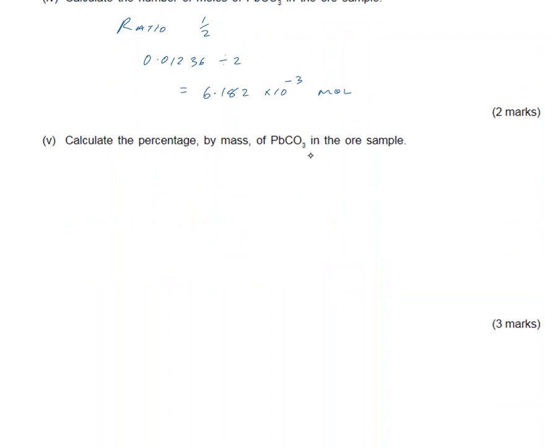Now calculate the percentage by mass of the lead carbonate in the ore sample. First we need the relative molecular weight. That equals lead plus carbon, which is 12.01, plus 3 times the 16 oxygens. Don't forget to use brackets. That gives us a molecular weight of 267.21. Mass equals moles times the relative molecular weight.